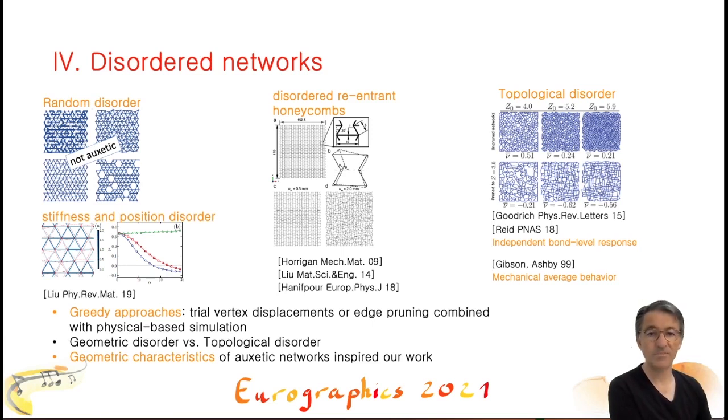While we follow a similar approach, a crucial difference is our focus on simple local geometric criteria for producing the initial network and for selecting the edges to be removed. We avoid, whenever possible, the use of computationally intensive physical simulation. Only at the very end of the process, we apply one such simulation in order to compute the Poisson ratio.